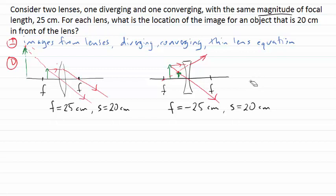I'm going to be using my thin lens equation here, which you will recall says 1 over the object distance plus 1 over the image distance S prime equals 1 over the focal length. And it's this S prime here that I'm going to try to calculate.